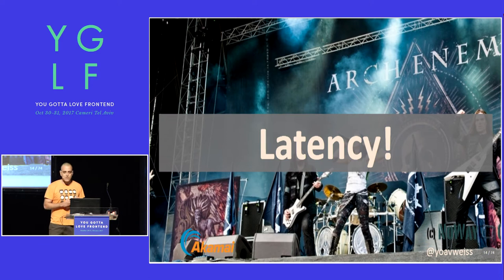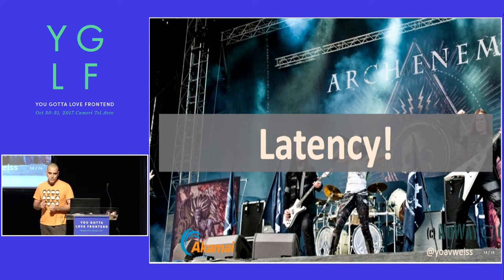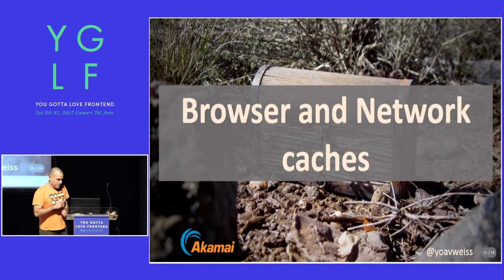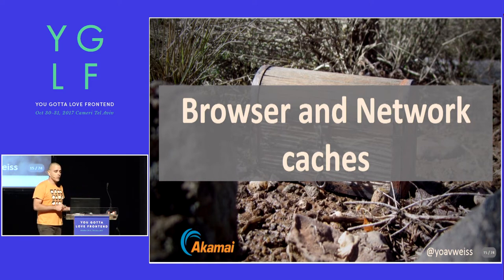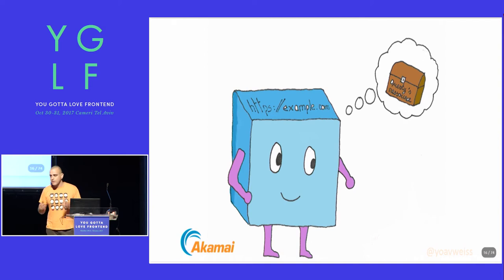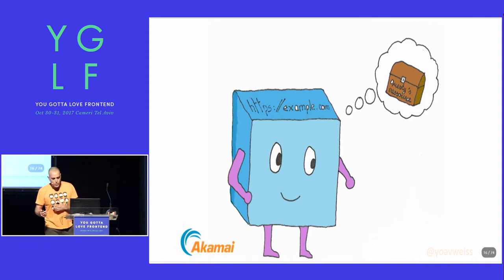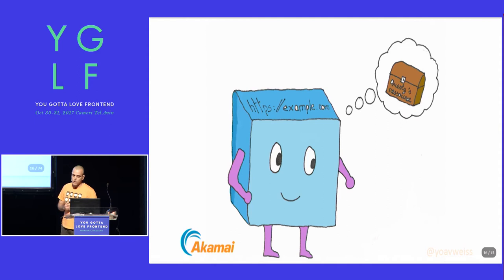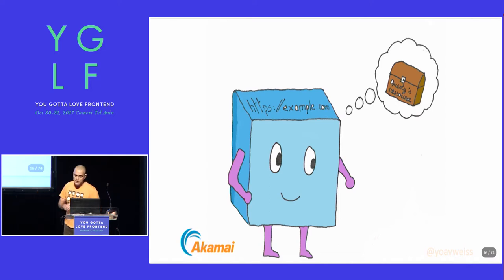As performance-conscious front-end developers, latency is our nemesis, and caching is its biggest weakness. So we've established that caching is awesome — but how does caching on the web look? What are the different caches that a request hits on its way to your server? A request object is created inside the rendering engine, whose sole purpose is to find a matching resource and bring it back to render the page. There are different types of requests and resources, each with a different URL.